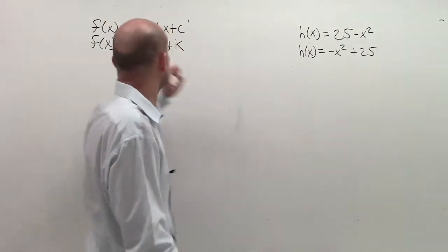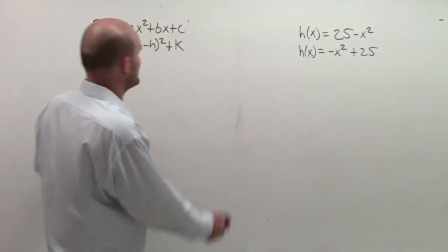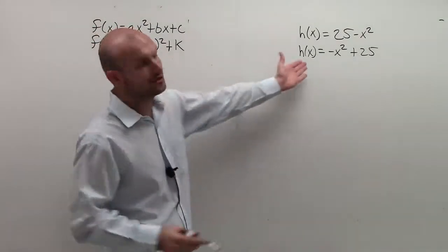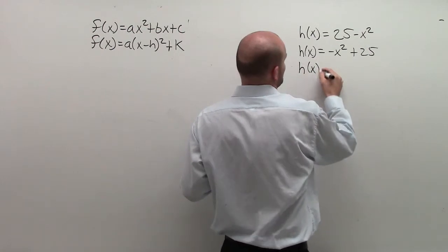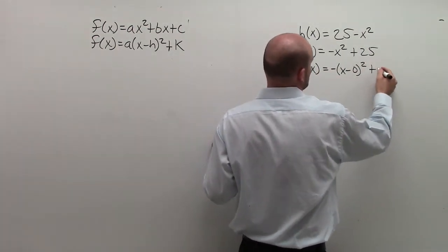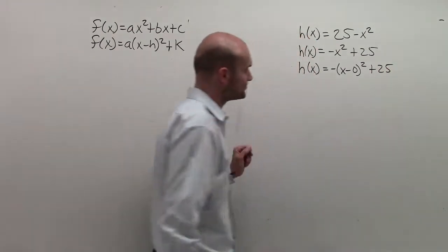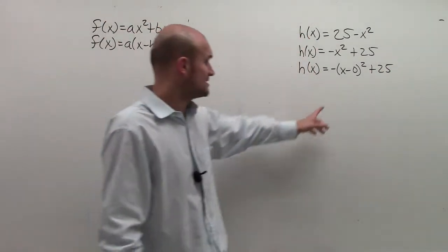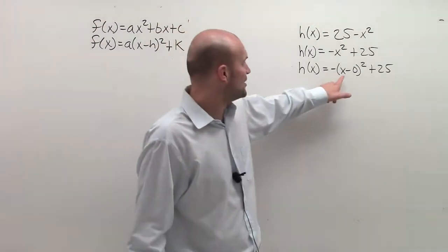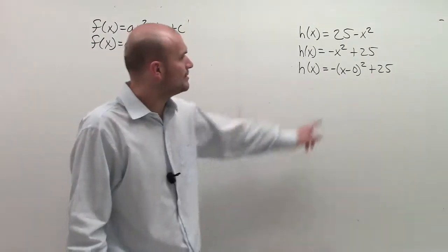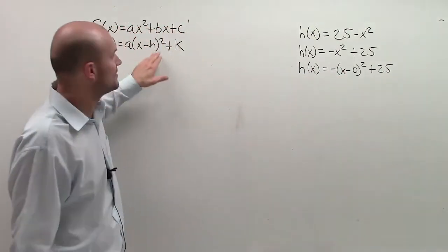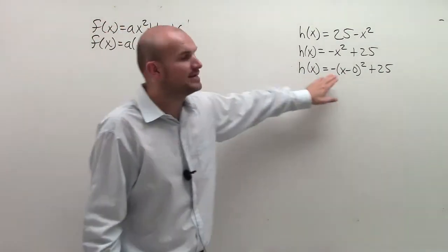Then the next thing I need to do is I need to rewrite this. Can I rewrite my (x minus h) squared? Can I rewrite it to look like this form? And yes, if you take a look at it, if I write h(x) equals negative (x minus 0) squared plus 25. And what you'll notice is, sorry, it's going to happen. So I have (x minus 0) squared, because x minus 0 obviously is x. So that gives us it in this format.